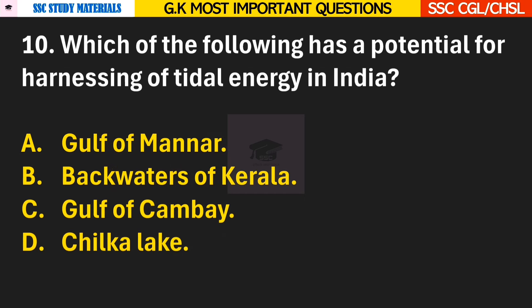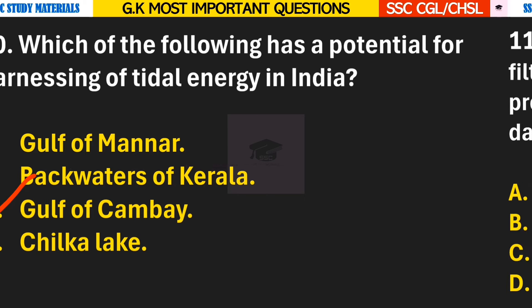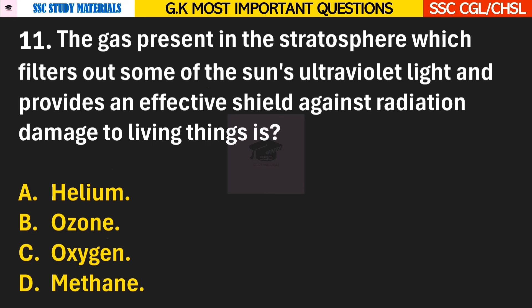Question 10: Which of the following has potential for harnessing of tidal energy in India? Answer C — Gulf of Cambay. Question 11: The gas present in the stratosphere which filters out some of the sun's ultraviolet light and provides an effective shield against radiation damage to living things is? Answer B — Ozone.